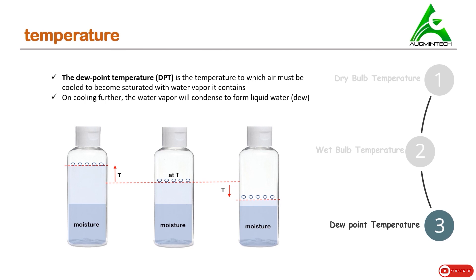The dew point temperature is the temperature to which air must be cooled to become saturated with water vapor it contains. If temperature further decreases, the water vapor in the air gets precipitated out in the form of dew. The temperature at which this happens is known as dew point temperature.